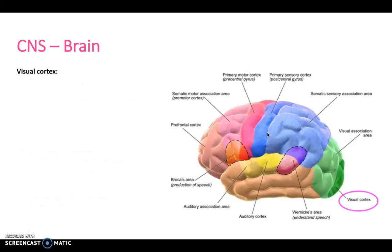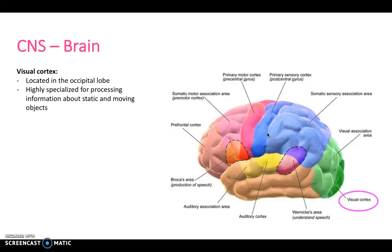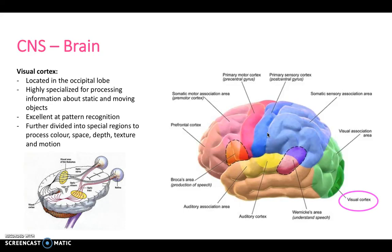The visual cortex in the occipital lobe is highly specialized for processing information about static and moving objects. It's excellent at pattern recognition and is further divided into specialist regions within the occipital lobe. This schematic drawing shows the pathway down the optic nerve, the optic chiasm, the optic tract to the lateral geniculate nucleus of the thalamus, and then back to the visual cortex.